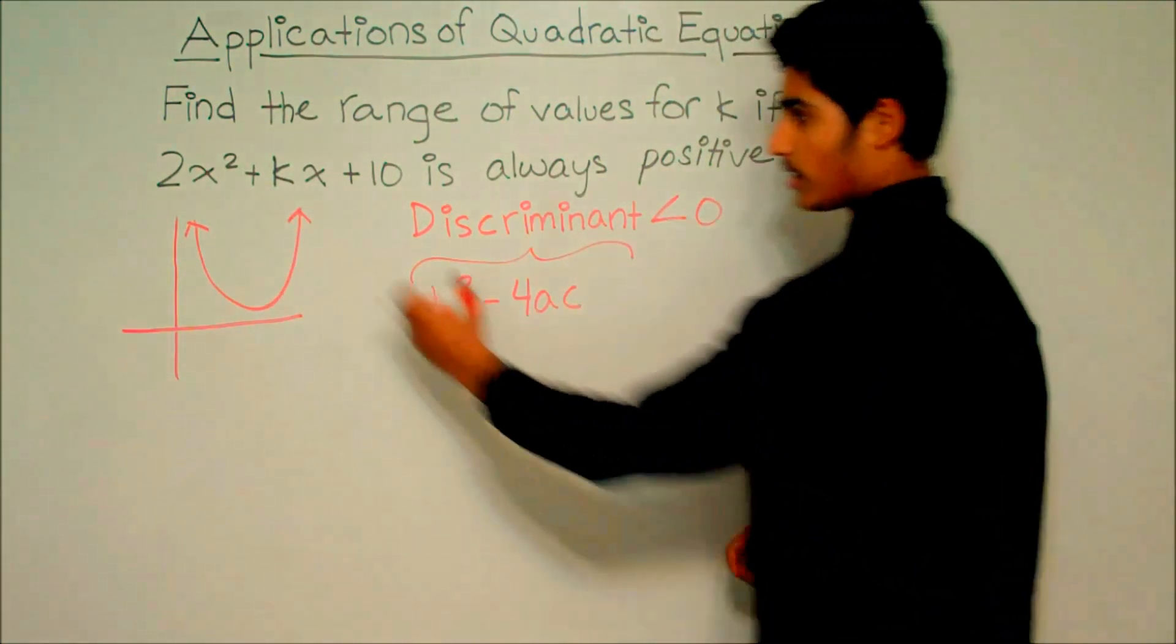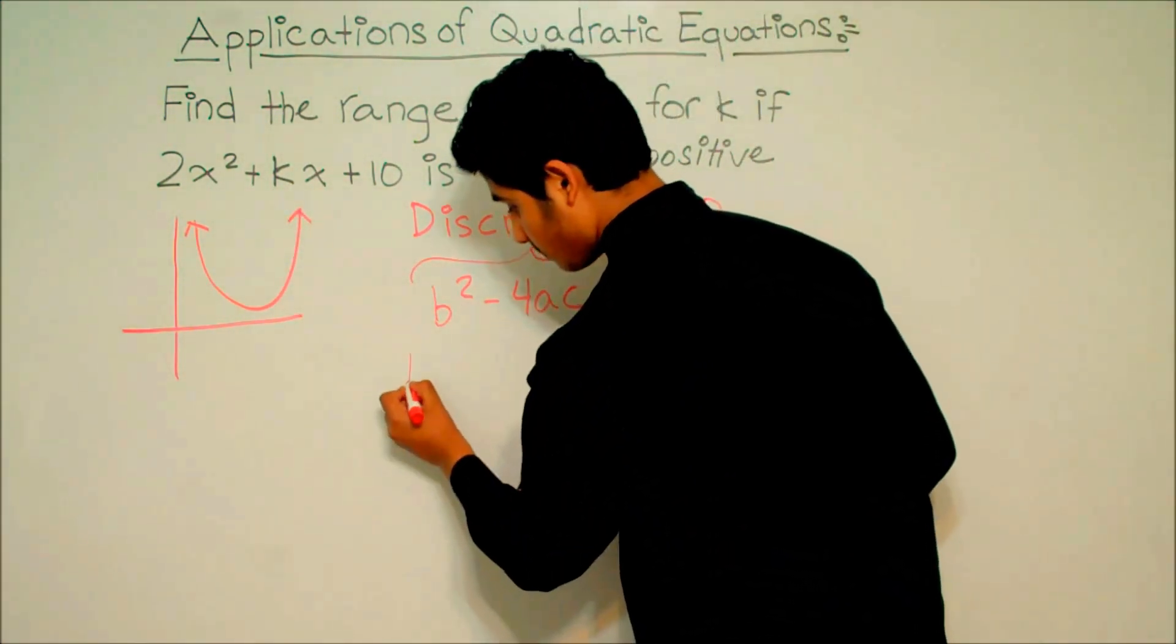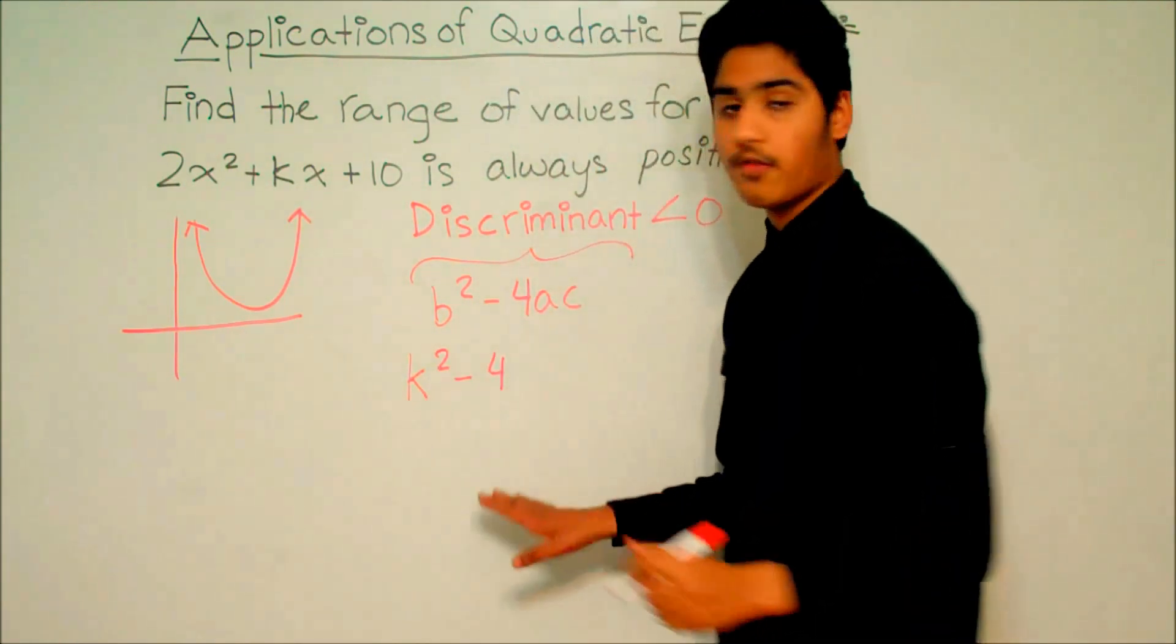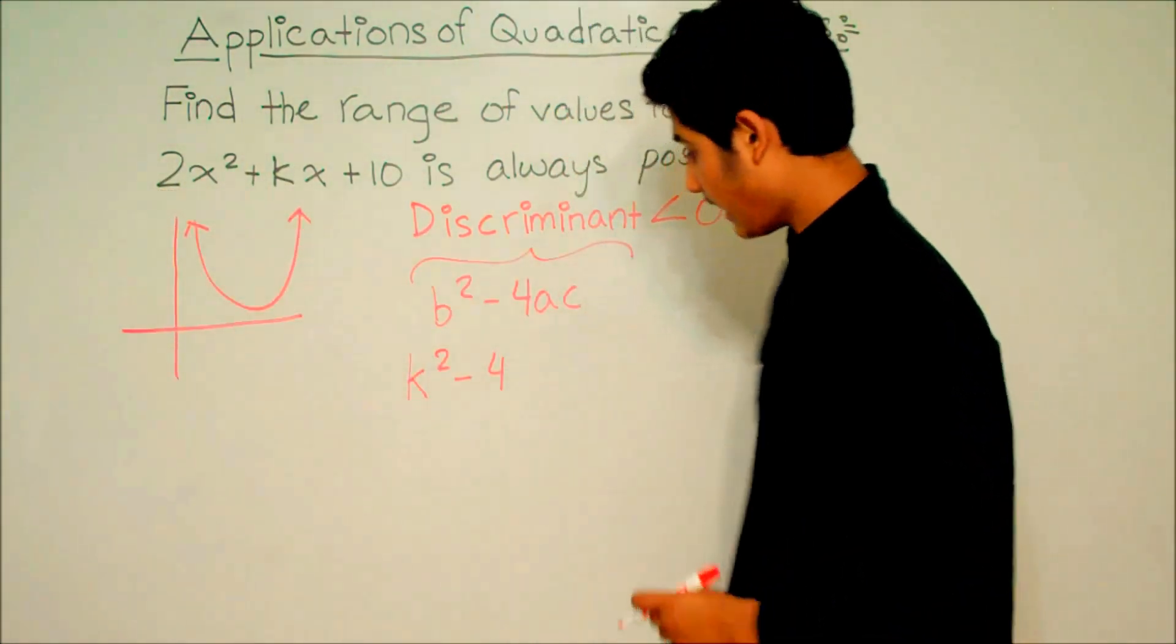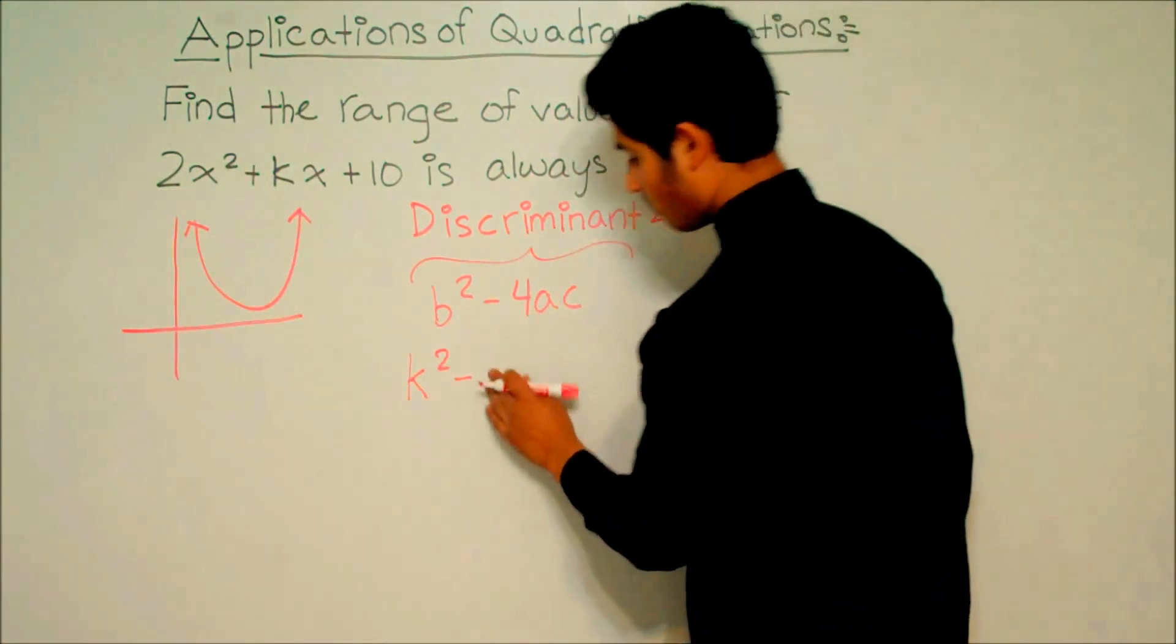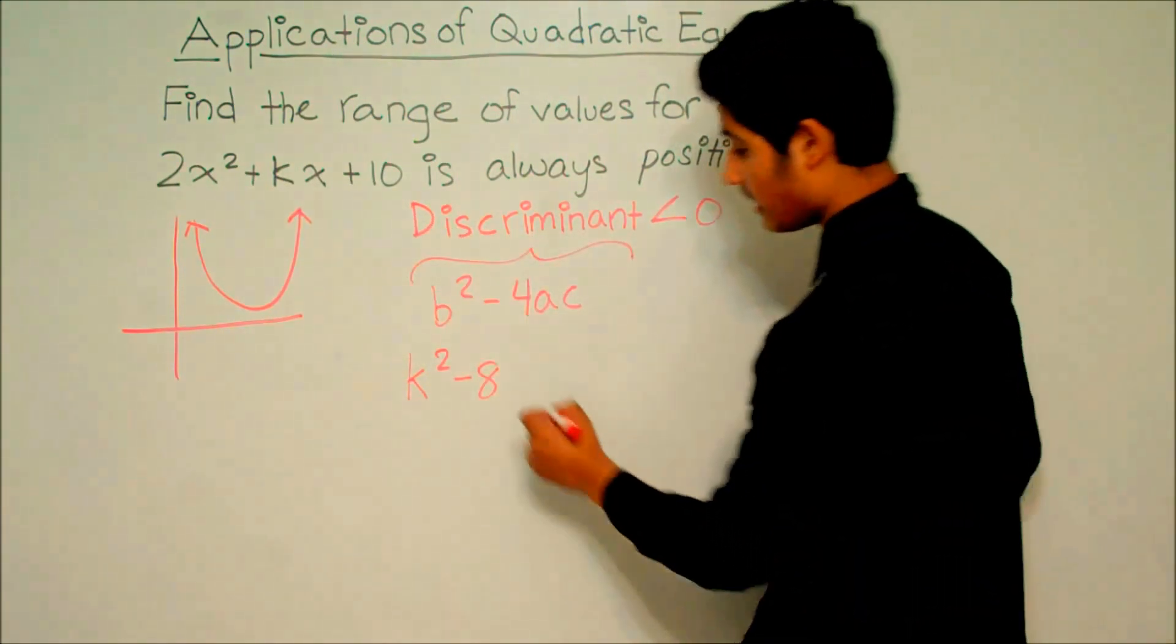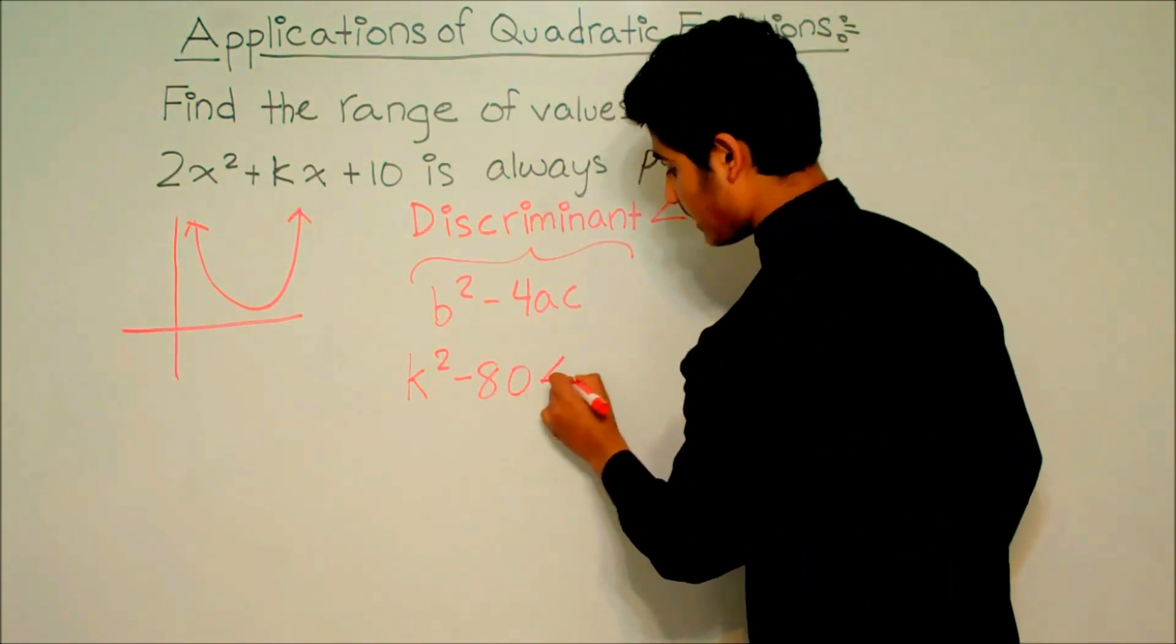So b², which is k², minus 4 times a. 4 times a, which is 4 times 2, is 8. 8 times c, which is 10. 8 times 10 is 80, is less than 0.